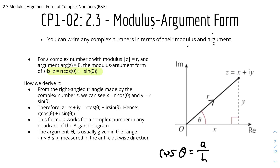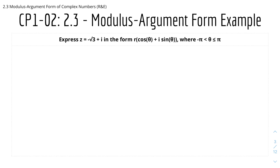This formula works for a complex number in any quadrant of the Argand diagram, but you just have to make sure you find the right argument. The argument of this modulus argument form is θ, given in the range −π < θ ≤ π, measured in the anti-clockwise direction from the positive real axis. For example: express z = −√3 + i in the form r(cosθ + i sinθ), where −π < θ ≤ π.